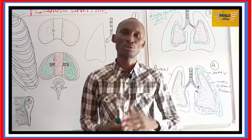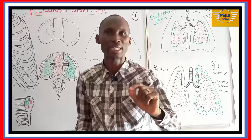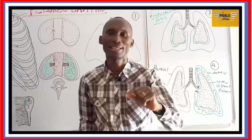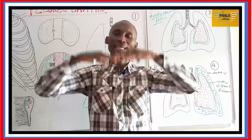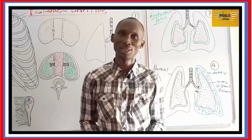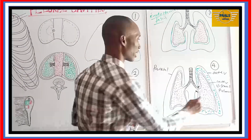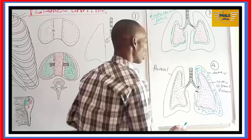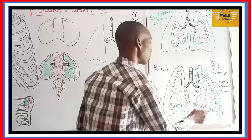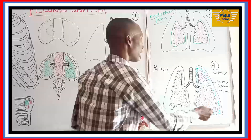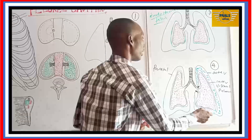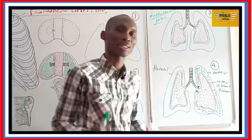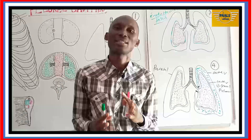So what have I said? The visceral layer is attached to the lung tissue, and the parietal layer is attached to the inner linings of the thoracic cavity. Now let's look at the functions of this fluid. Number one, it maintains the pressure we've talked about. Number two, it ensures there is less friction during movement. Number three, it does what is called mechanical coupling.